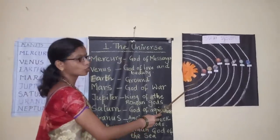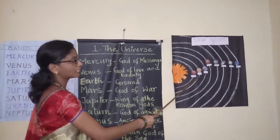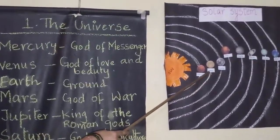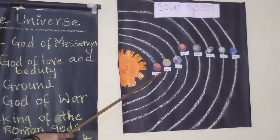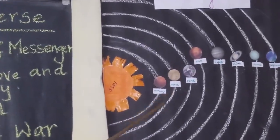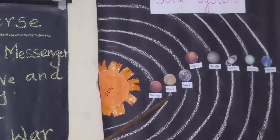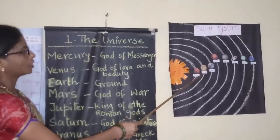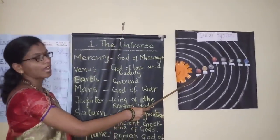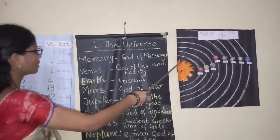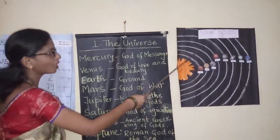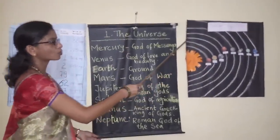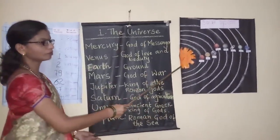Venus is the second planet in the solar system and it is the nearest neighbour of the earth. Venus is also known as the morning star or evening star because it is the brightest planet. It is named as the Roman god of love and beauty. Venus takes 225 days to complete one revolution around the sun.